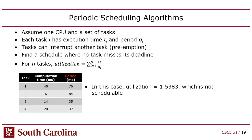With that set of four tasks — 40 over 76 plus 6 over 84 plus 14 over 35 plus 20 over 37 — the utilization adds up to 1.5, so there's no way to schedule them if they were periodic. The example I showed assumed they ran just once, not periodically. If they have to reissue after every period, this set is non-schedulable on one CPU.